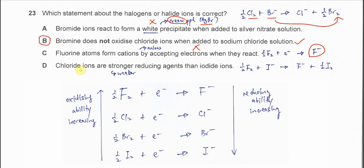Okay, for D. Chloride ions are stronger reducing agent than iodide. So just look at here. If we compare the halide, we know that when down the group, the halide has a stronger reducing ability. So means it is a greater reducing agent. Means the iodide can easily reduce bromine, chlorine and fluorine.